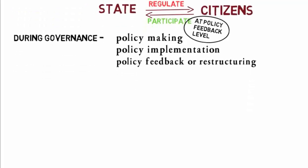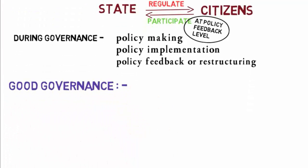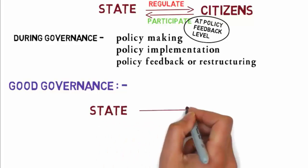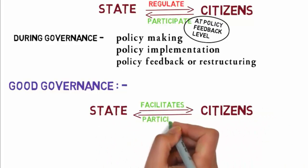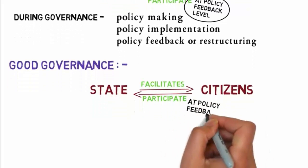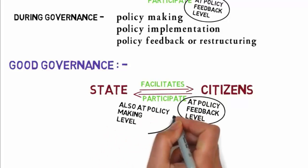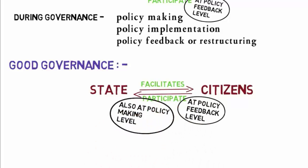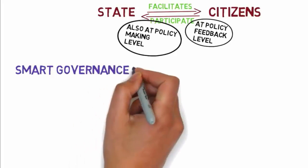The third type is good governance, where a state facilitates citizens and citizens can participate at both the policy feedback level and the policy making level. This is a better type of governance than the previous ones.